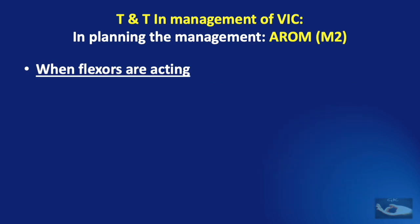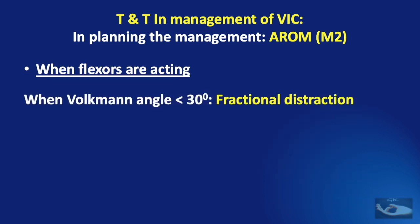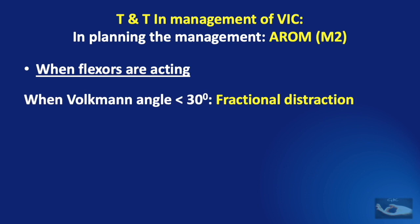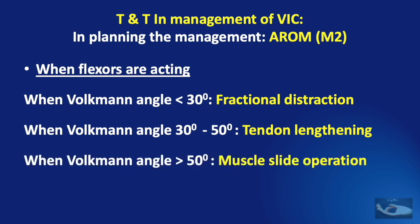A simple tip to remember what plan to make when the flexors are acting: when the Volkmann's angle is less than 30 degrees, it is very minimal shortening of the tendons and fractional diaphyseal lengthening can be planned. When the Volkmann's angle is about 30 to 50 degrees, a tendon lengthening procedure with Z-plasty can be planned. But if the angle is more than 50 degrees, a muscle slide operation should be done.